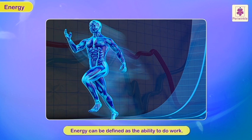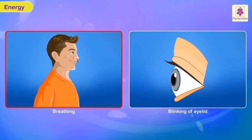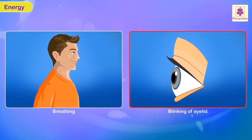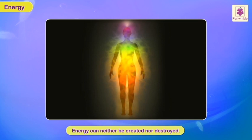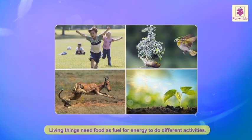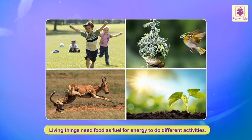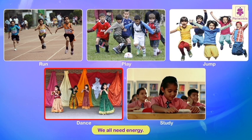Man has developed various machines with the aim of getting maximum work done with minimum use of force and energy. Energy can be defined as the ability to do work. For any kind of action to take place, energy is required. Even something as simple as breathing or the blinking of eyelids requires energy. Energy can neither be created nor destroyed — it simply changes its form from one kind to another. Living things need food as fuel for energy to do different activities. We all need energy to run around, play, jump, dance and even study.